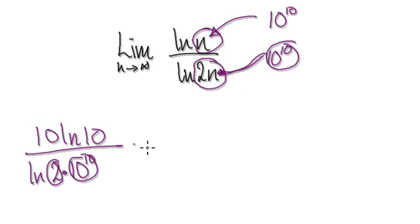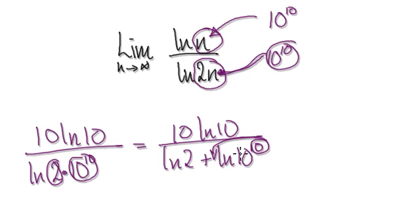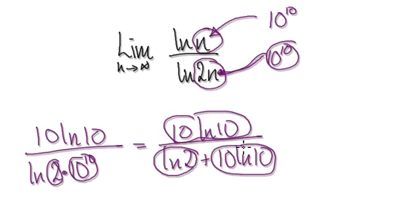Here you've got one thing multiplying another thing, so that's the same as natural log of 2 plus natural log of 10 to the power of 10, over this thing here. We can bring this down, so that would be 10 log 10. Now this is like a small number, and these two are pretty much the same — actually exactly the same. And this is going to be eventually small.